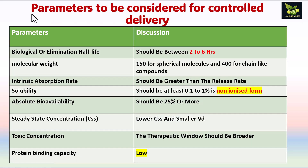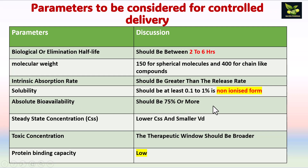Parameters to consider for controlled release: biological elimination half-life should be between 2 to 6 hours — not too low or too high. Molecular weight should not be very high — 150 for spherical molecules and 400 for chain-like compounds. Intrinsic absorption rate should be greater than release rate to avoid drug accumulation. Solubility should be at least 0.1 to 1% in non-ionized form. Absolute bioavailability should be 75% or more. Steady-state concentration (CSS) should be lower with a smaller volume of distribution. The therapeutic window should be broader, meaning the drug should not be very potent. Protein binding capacity should be low.